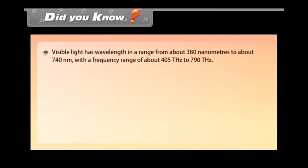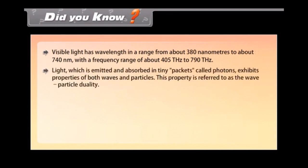Did you know: visible light has wavelength in a range from about 380 nanometers to about 740 nanometers, with a frequency range of about 405 terahertz to 790 terahertz. Light which is emitted and absorbed in tiny packets called photons exhibits properties of both waves and particles. This property is referred to as the wave-particle duality.